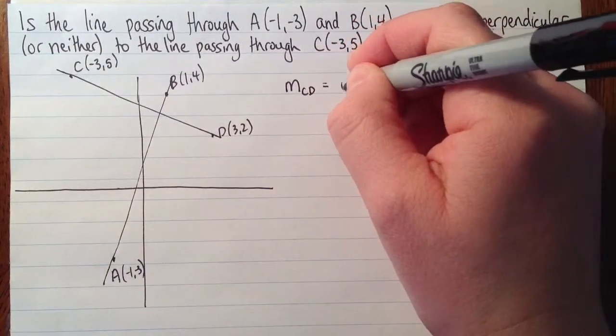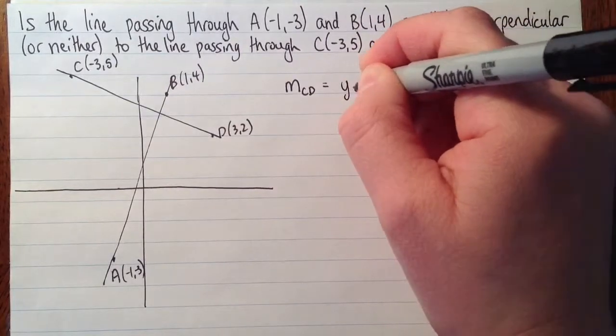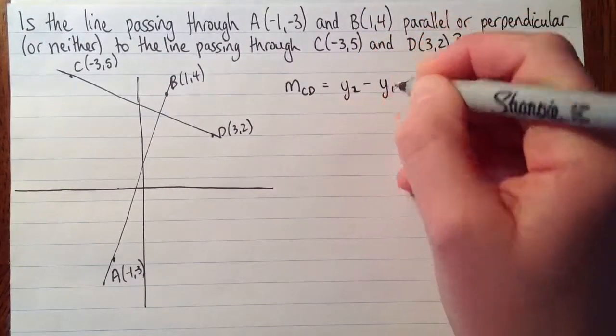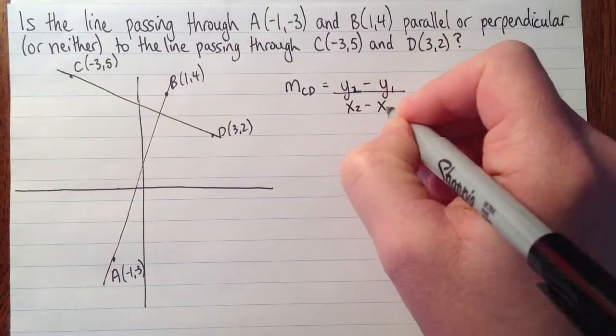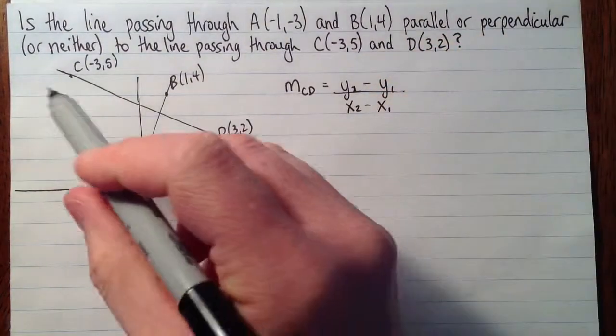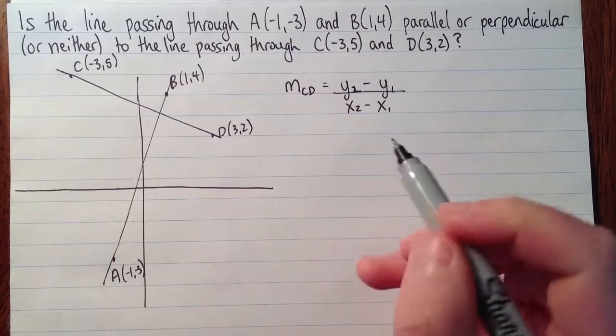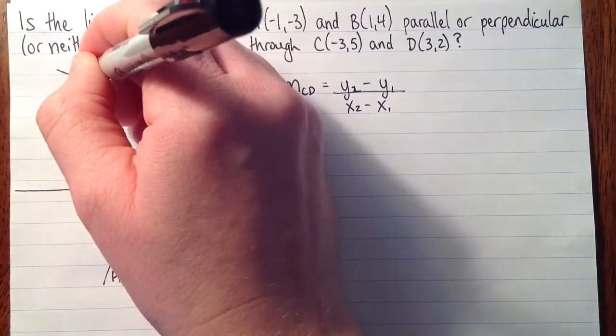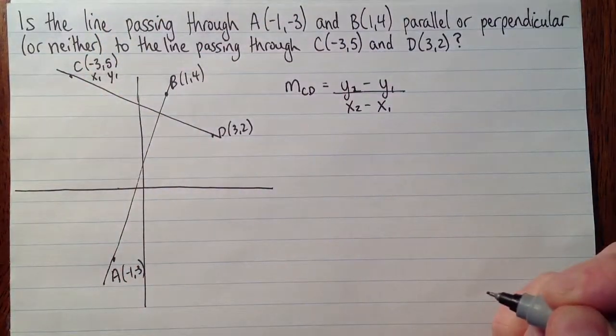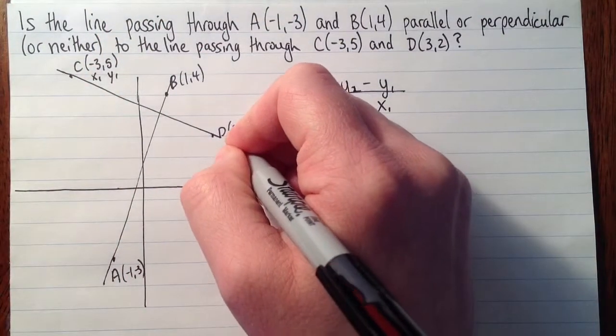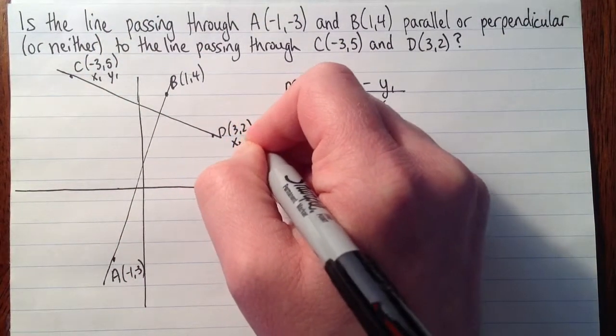And then I'll write the slope formula. y2 minus y1 over x2 minus x1. Now I have to decide which is x1 and y1 and so on. So I'll make this my first point, C. So I've got x1, y1. And then D, I've got x2, y2.